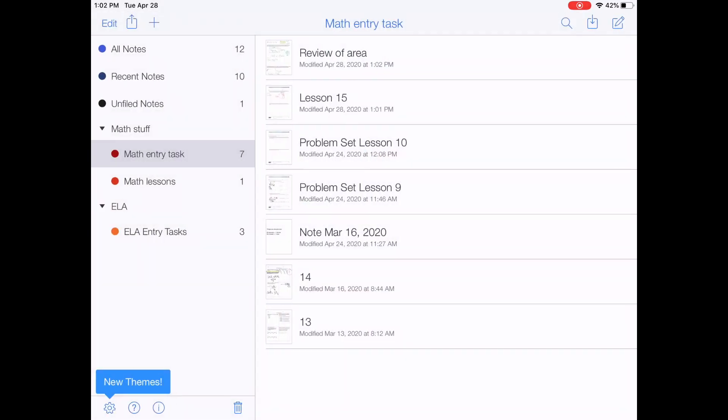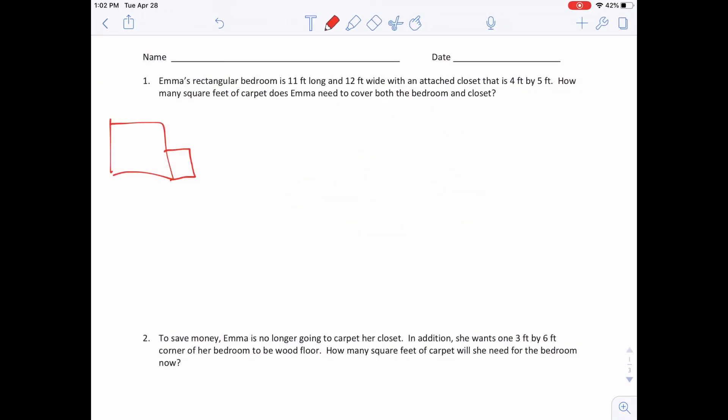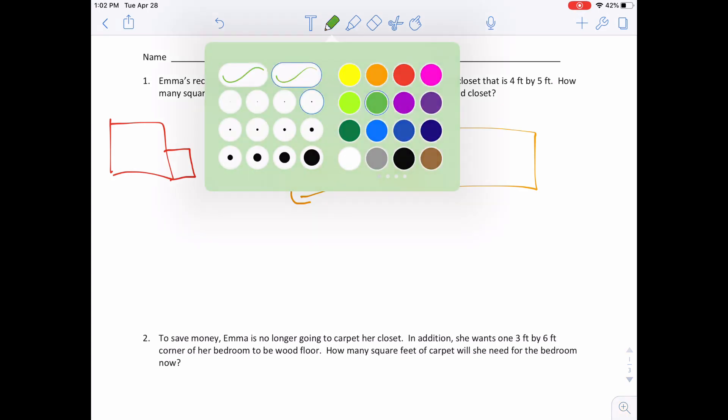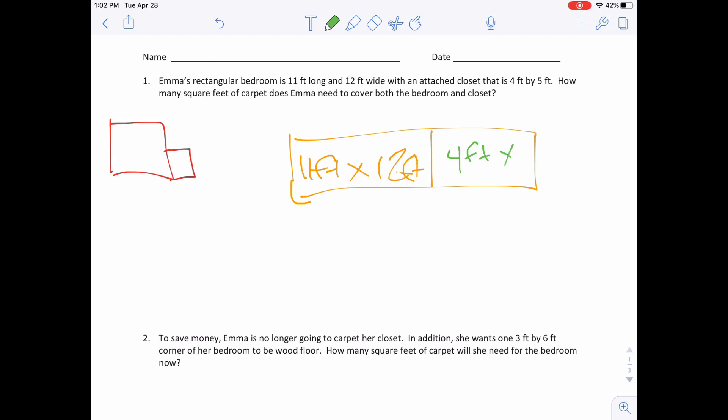But because we're trying to figure out both, I'm going to come over here. I'm going to show you in a tape diagram. Because we're trying to figure out both, we have to add them together because we want to know the total number of carpet needed. So we're going to add 132 feet, plus 20 feet, because we're doing area. You can go ahead and do that one. You can fill it in on your own.